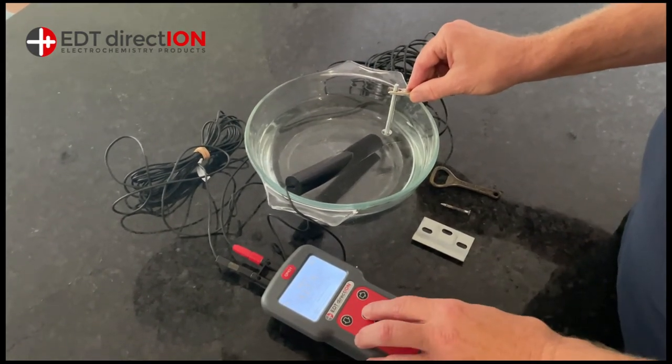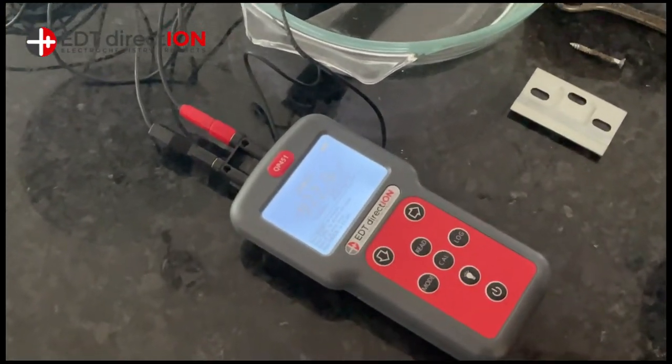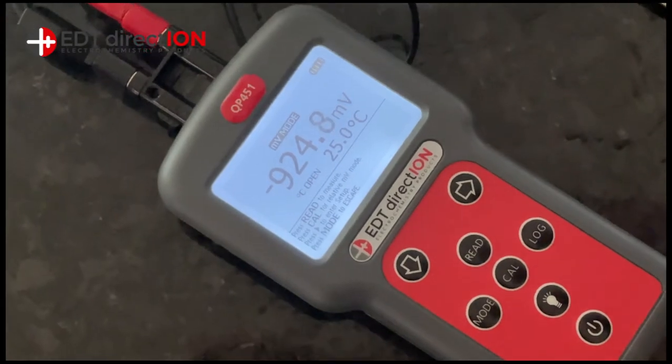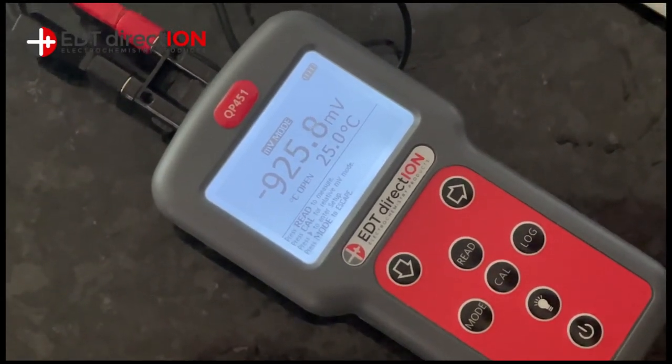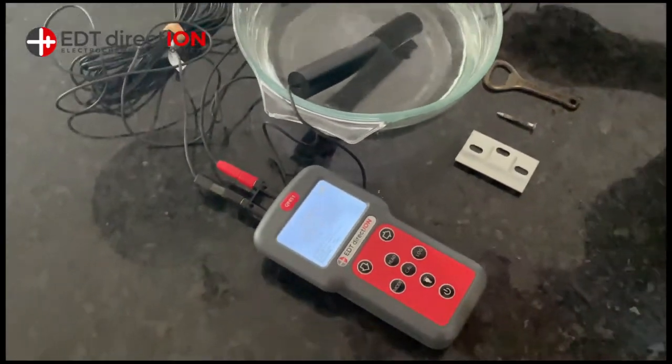A well protected galvanized hull is going to be around minus 900 millivolts. This one's minus 926, so that's well protected - a nice clean bit of zinc. That's the sort of aspirational value you want for your hull.